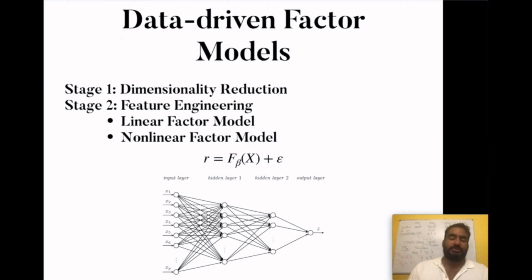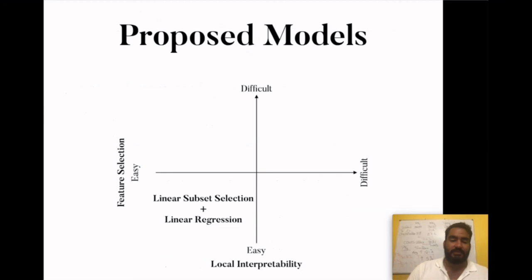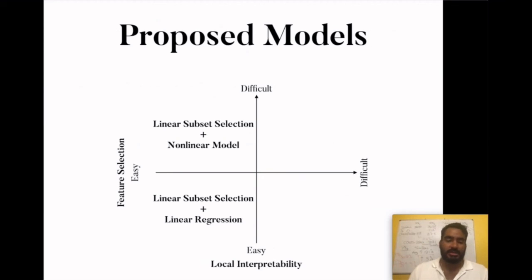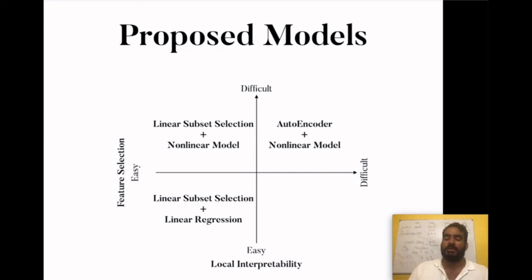We use neural networks because they can represent any continuous function and can be trained in a data-driven fashion. We end up with three models growing in nonlinearity and opacity: first, linear subset selection with linear regression; then linear feature selection with a nonlinear model; and finally the autoencoder combined with a nonlinear model — both stages being nonlinear.